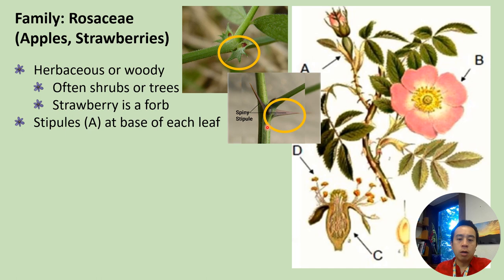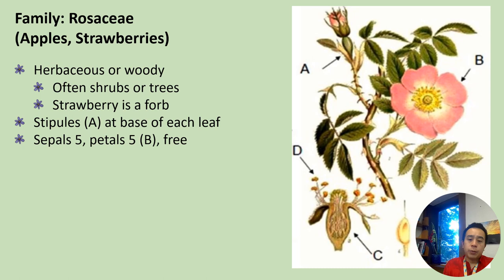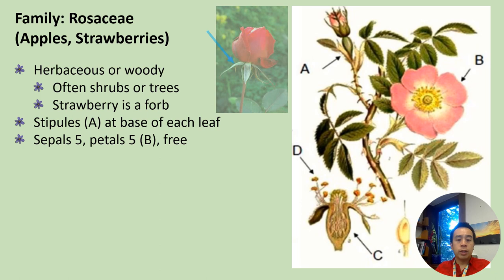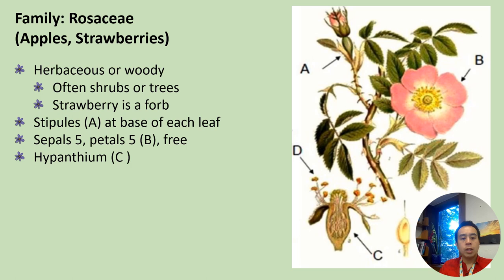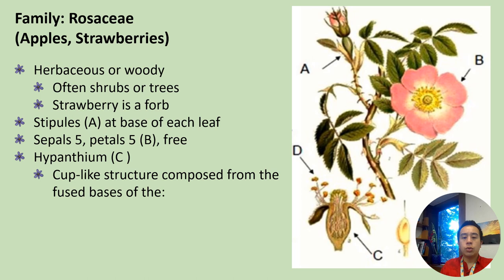Plants in the Rosaceae family typically have five sepals and five petals, which are free — not fused — so they're all separate from each other. Sepals are essentially modified leaves at the base of the flowers where the flowers come out of the stem. There is also a hypanthium, which is essentially a cup-like structure composed from the fused bases of the petals, sepals, and stamens. Usually there are a lot of stamens in Rosaceae plants.